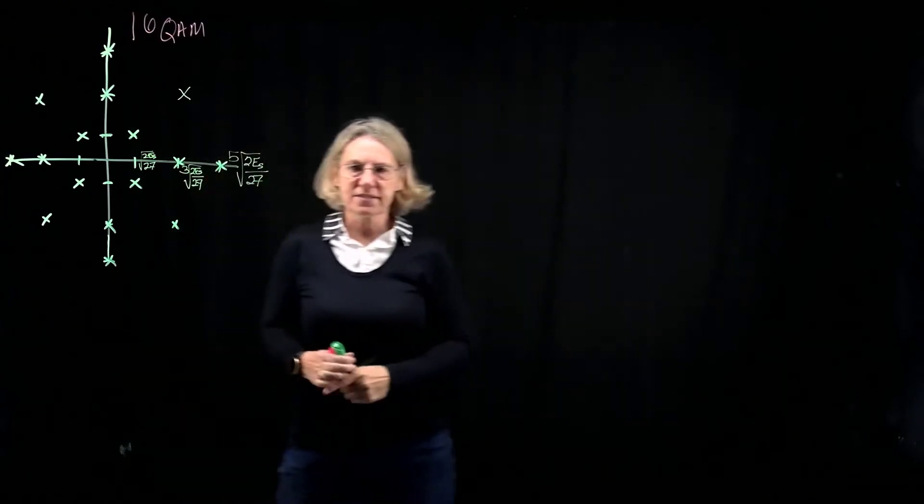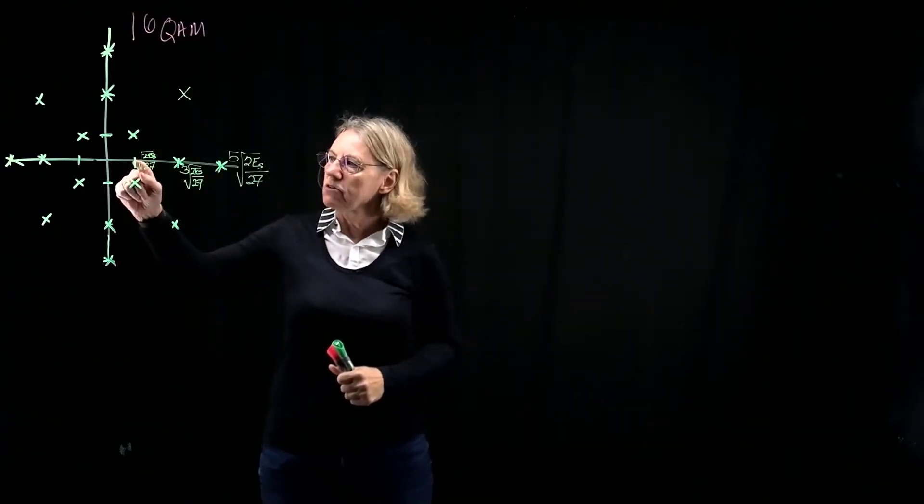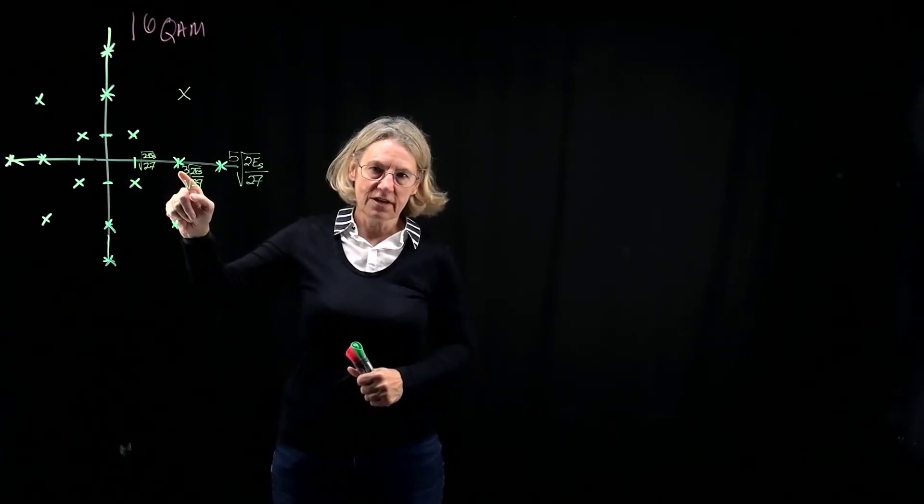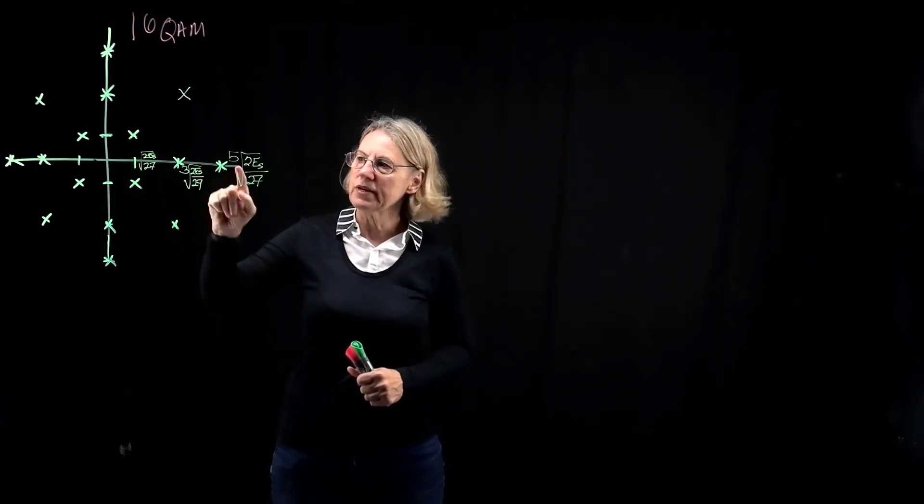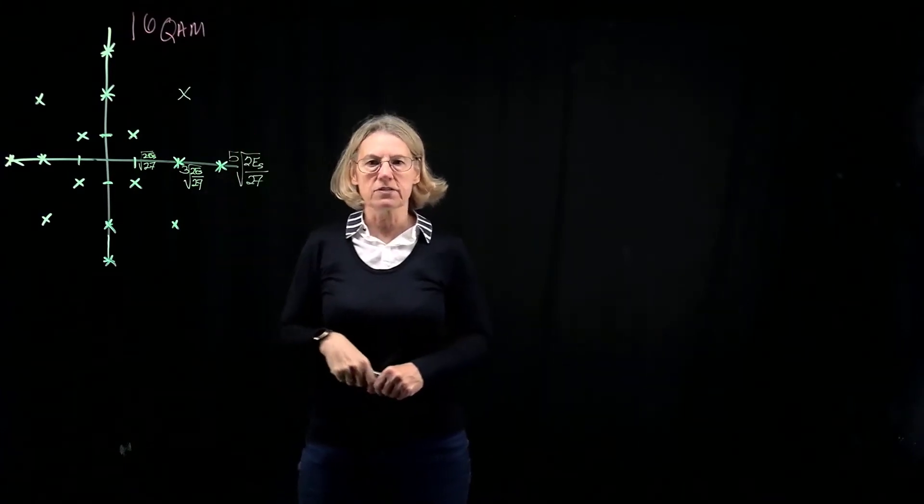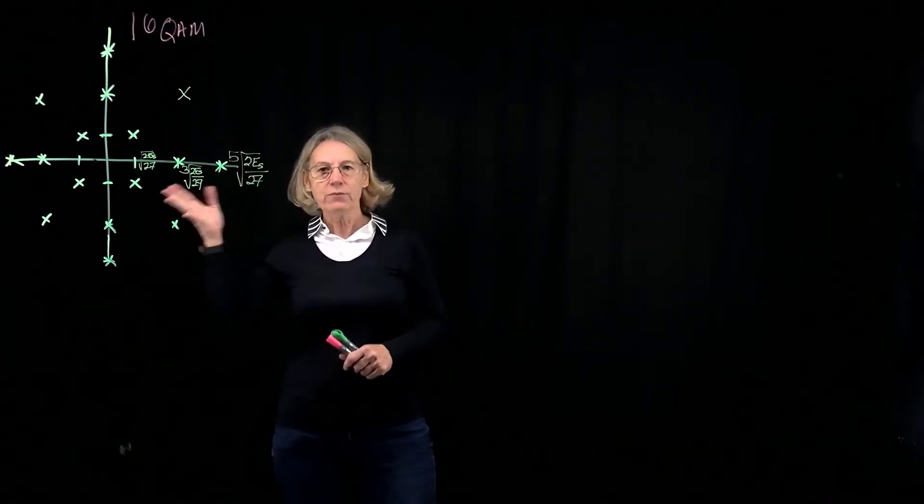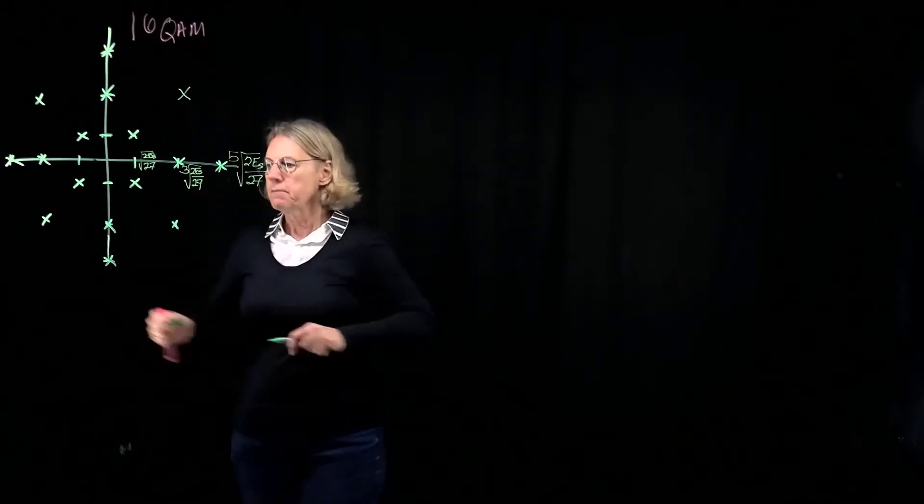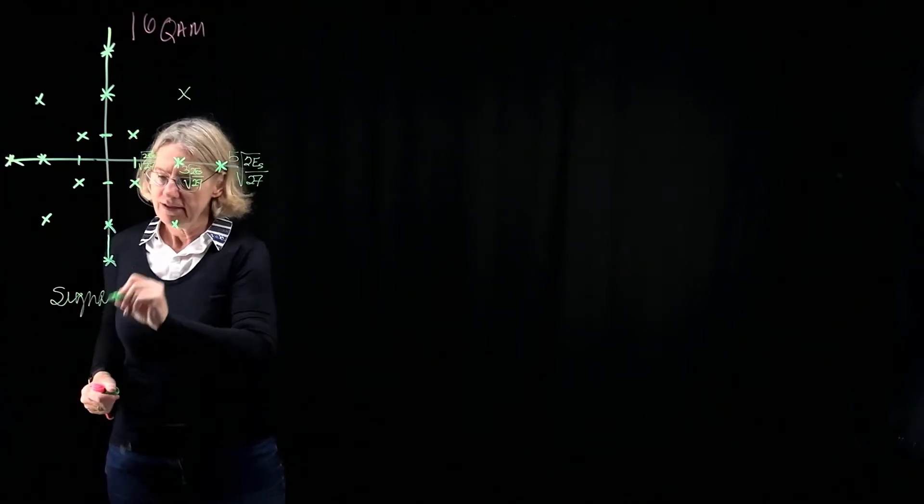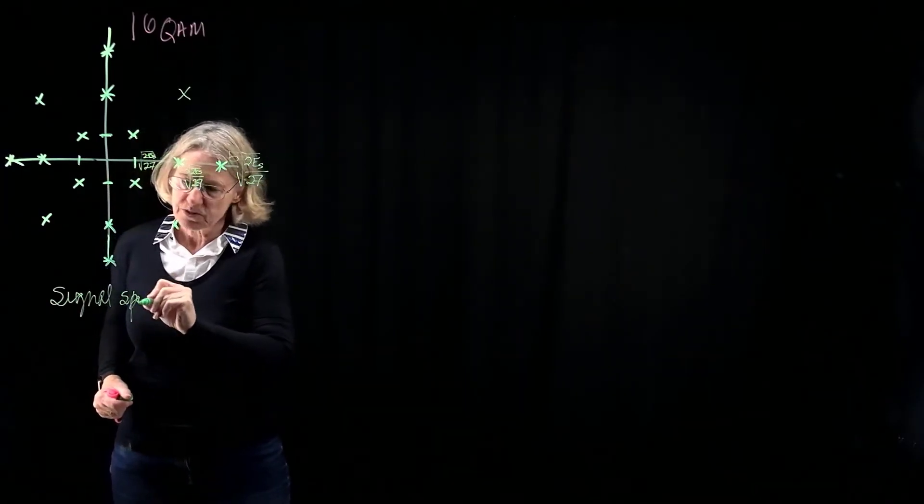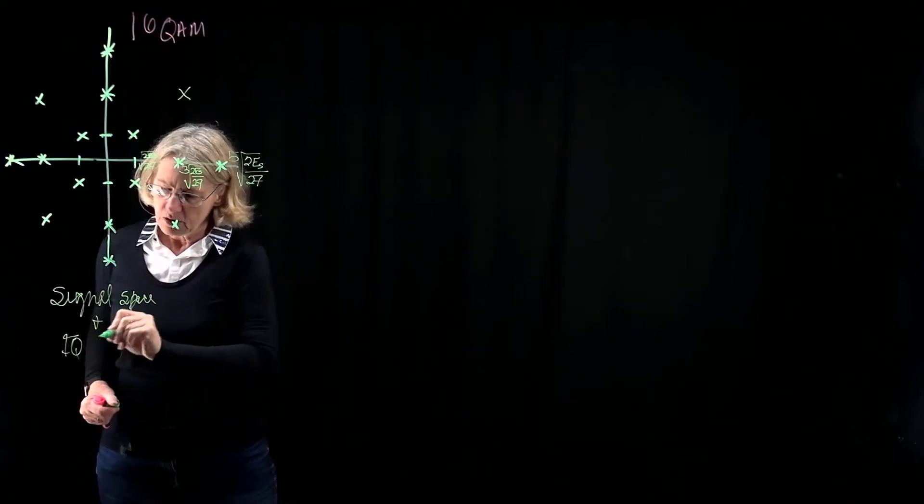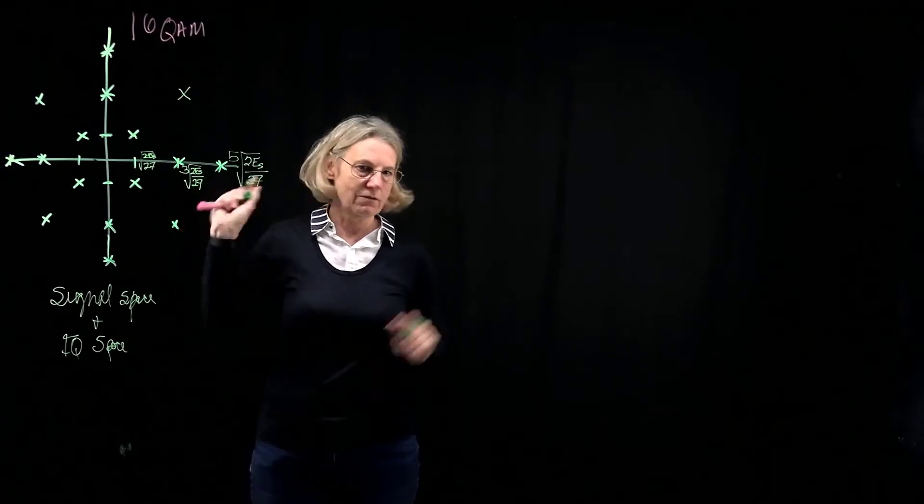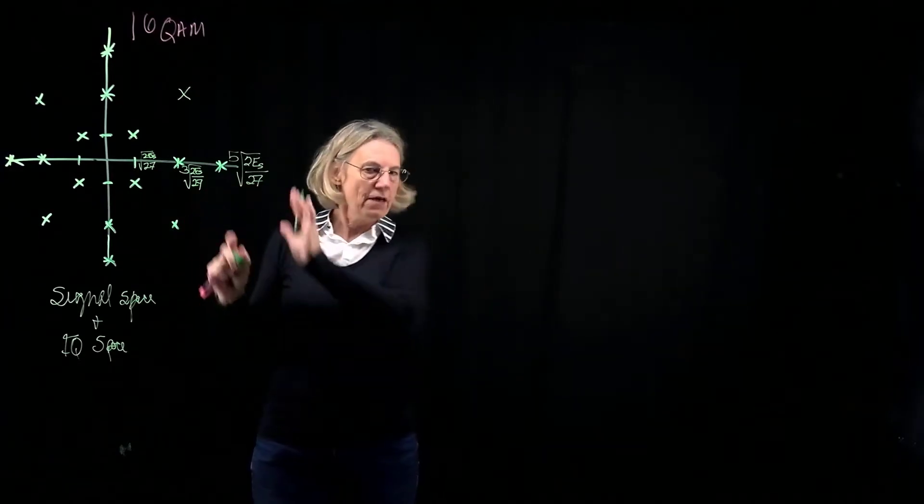If I look at the coordinates in this system, first of all, I marked out 1 times the square root of 2ES over 27, 3 times the square root of 2ES over 27, and 5 times the square root of 2ES over 27. So why do we have these coordinates, this choice of coordinates? Well, this is the difference between signal space and IQ space. In IQ space, what would I have done? I would have just said 1, 3, 5. That would have been easier. But somehow this is different.